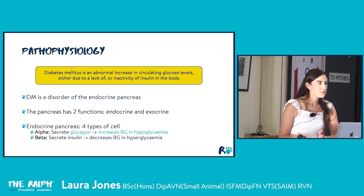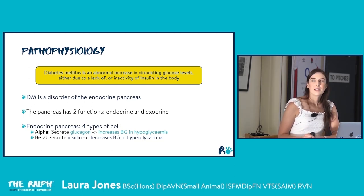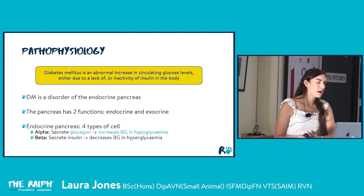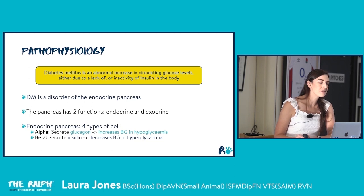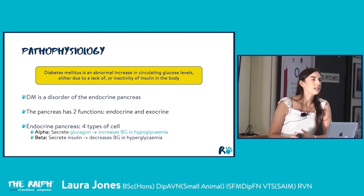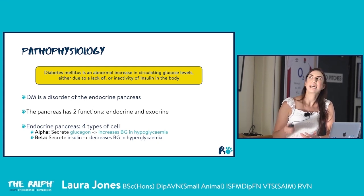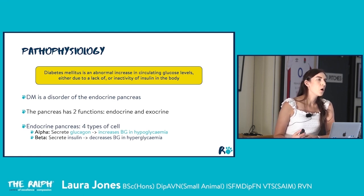The pancreas has both exocrine functions — secretion of digestive enzymes — and endocrine functions which take place in four different cell types: alpha cells, beta cells, delta cells, and pancreatic polypeptide (PP) cells. The two we really care about are alpha and beta cells. Alpha cells secrete glucagon, which increases blood glucose in a hypoglycemic patient, and beta cells secrete insulin, which decreases blood glucose in a hyperglycemic patient.